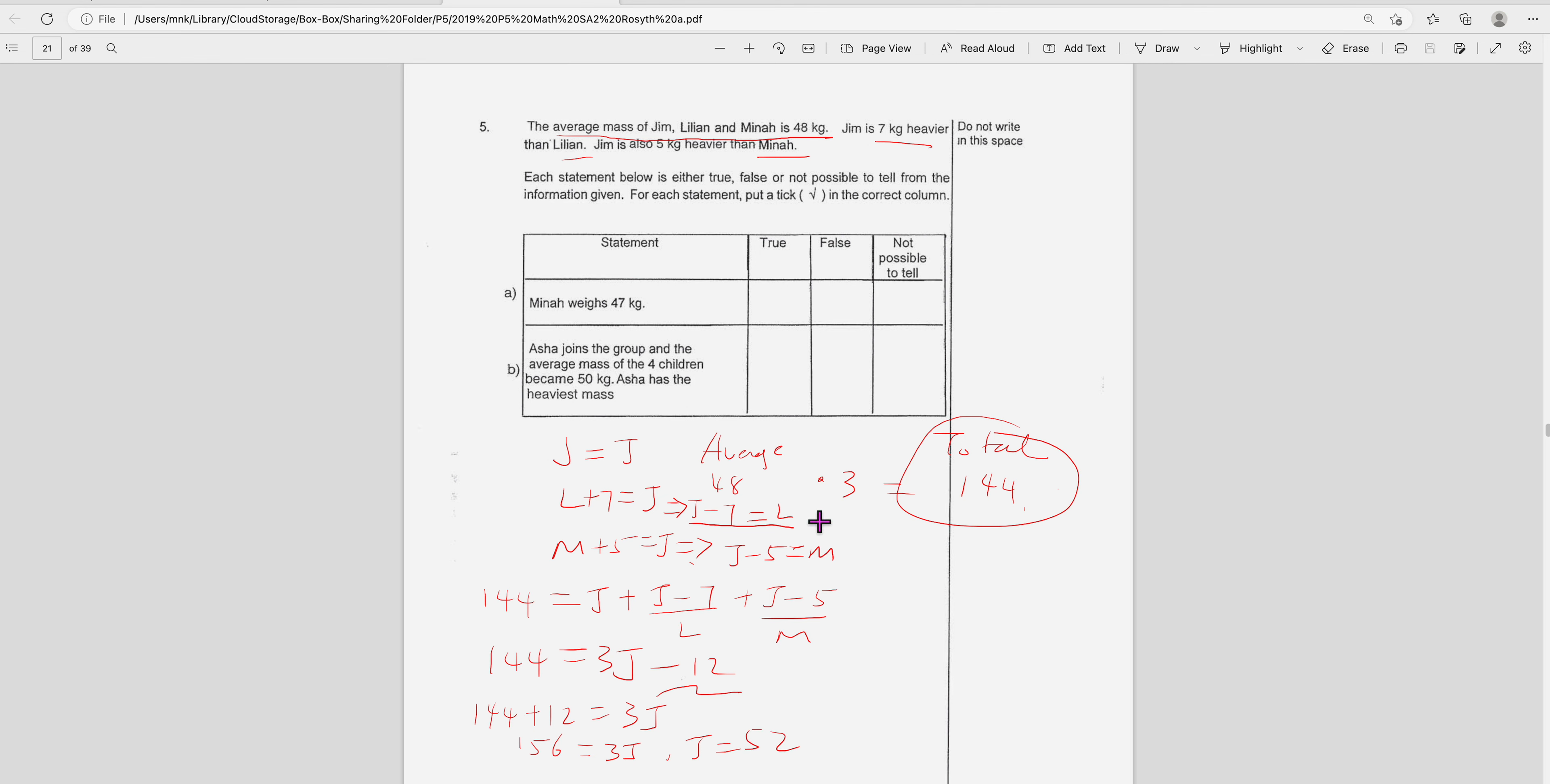So with this, you can find out J equals 52. So L is 52 minus 7, which is 45. Then M will be 52 minus 5, which is 47. It's good that you use a highlighter to highlight so you can see. This is L, this is M, then J is 52, so you can see much clearer.